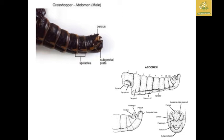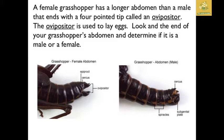In the male grasshopper, up to the eighth segment there are spiracles, the ninth segment has male genital characters, and the tenth and eleventh have the circus and sub-genital plate. You can see the difference between the female and male abdomen. In females there are oviposition structures, and males have the circus and subgenital plate. In females, spiracles are present up to the seventh segment only.